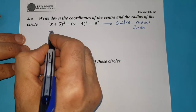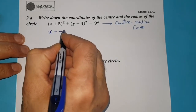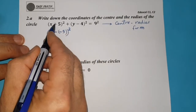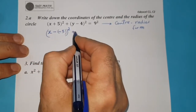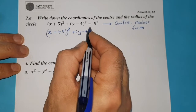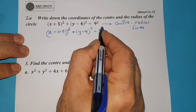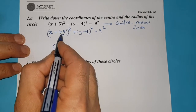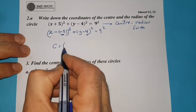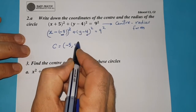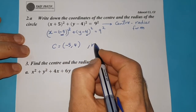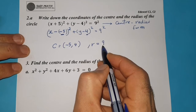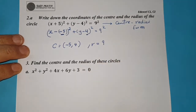This equation can be written as x minus negative 5 — I just try to write it in the form x minus, not plus. This is already in the form (y minus 4) squared equals 9 squared. So what is the center? Negative 5 and 4 — the center is (negative 5, 4). And the radius is this number: the square root of 9 squared, which is 9.